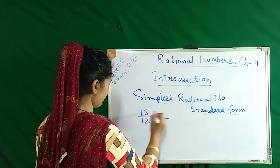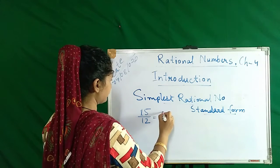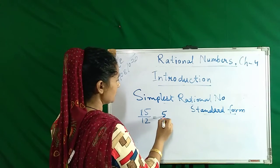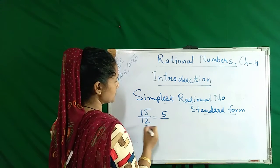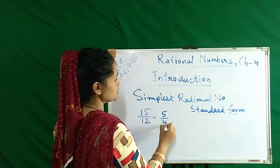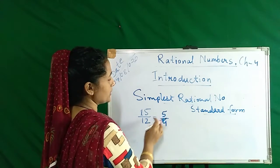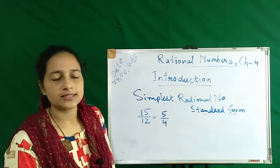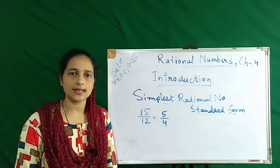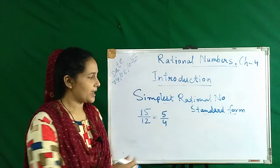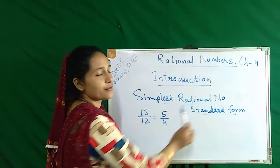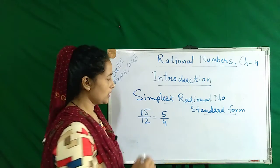We divide: 3 goes into 15 five times, and 3 goes into 12 four times. So 15/12 simplifies to 5/4. This is the simplest rational number and it is also called the standard form.